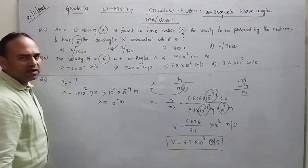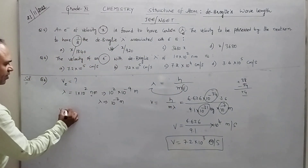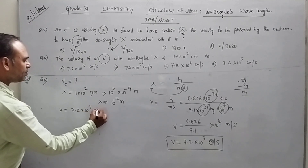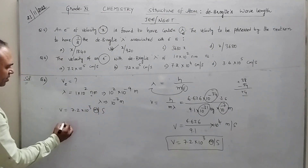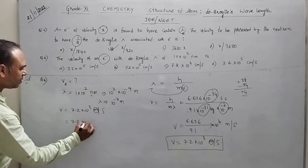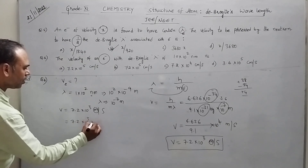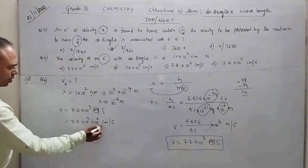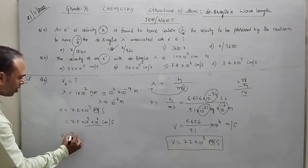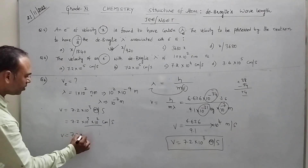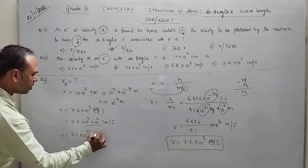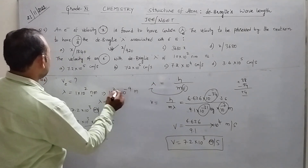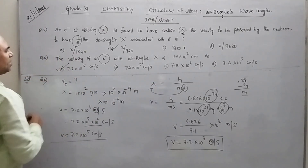V is 7.2 into 10 to the power of 3 meter per second. But the options are in centimeter per second. 1 meter equals 100 centimeters, so 7.2 into 10 to the power of 3 into 10 squared centimeters per second, giving 7.2 into 10 to the power of 5 centimeter per second. So option A is the answer.